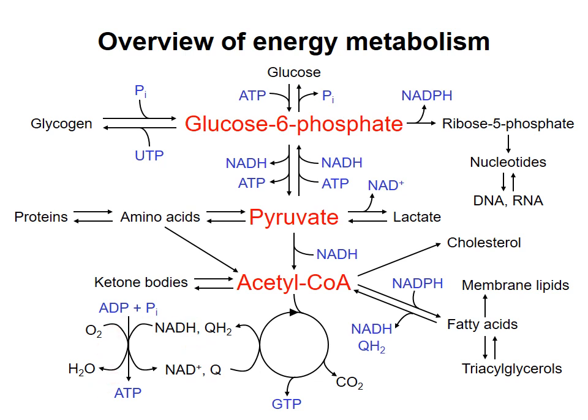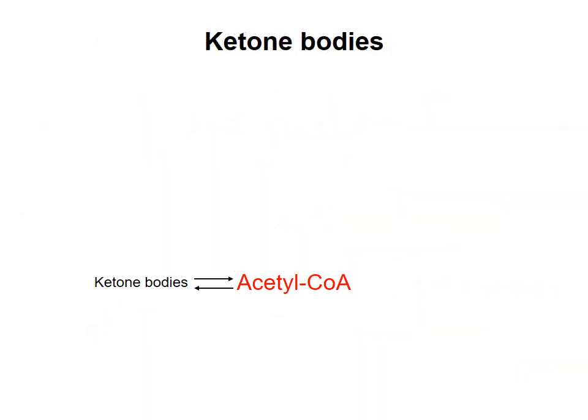However, the brain cannot take up fatty acids and does not carry out beta-oxidation to produce acetyl-CoA. Therefore, the liver diverts some of its acetyl-CoA to production of ketone bodies.